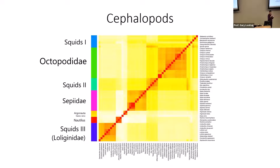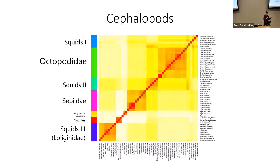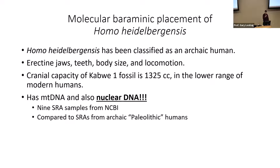Color bars in these analyses each represent an individual holobaramin. We may not have discovered all existing species in a holobaramin yet, but molecular methods allow us to delineate and separate holobaramins from one another. In the future, breeding new species within the same holobaramin may also be possible.